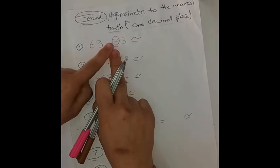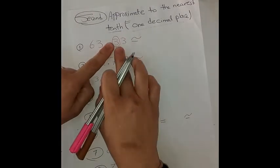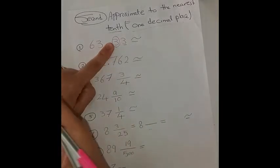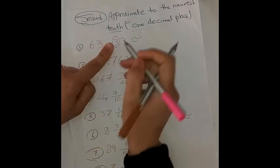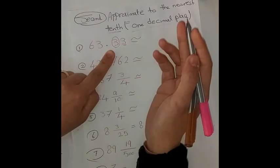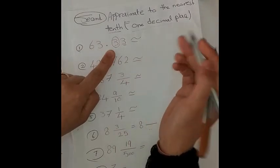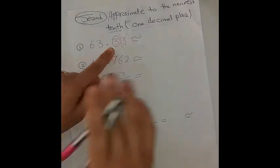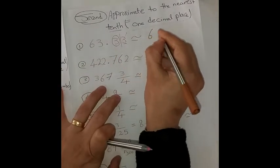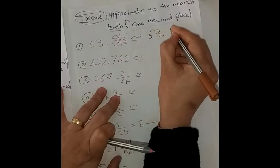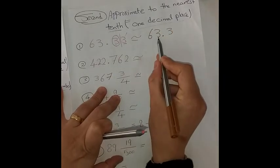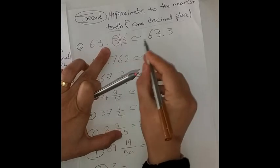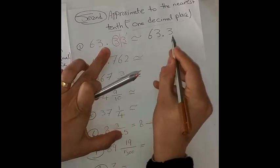I circle the tenth place and look at its neighbor, which is 3 — the hundredth place. Three is a poor digit, so we cancel it and write only the number without 3. So 63.33 is approximately equal to 63.3.